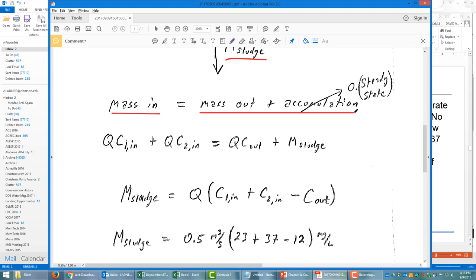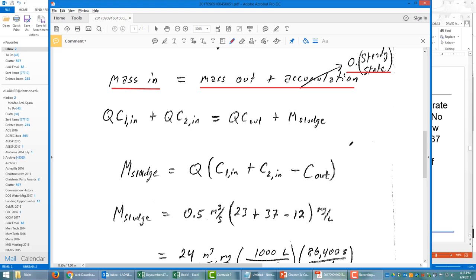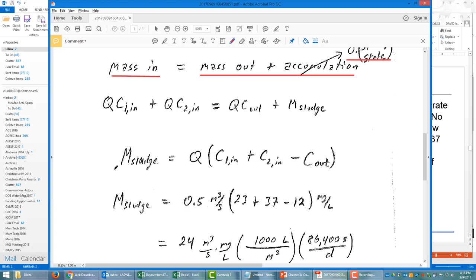We write this as a mass balance: mass in has to equal mass out plus accumulation, but we're assuming a steady state process here, and it's pretty safe to assume steady state at most drinking water treatment plants, at least for design calculations.